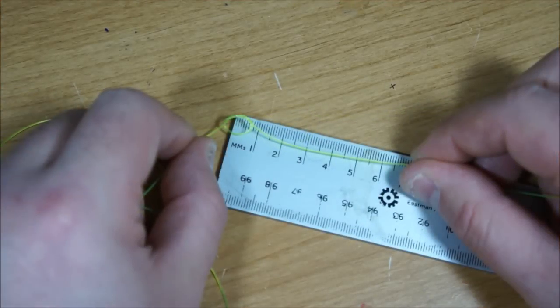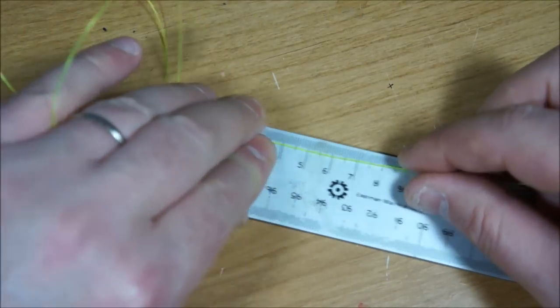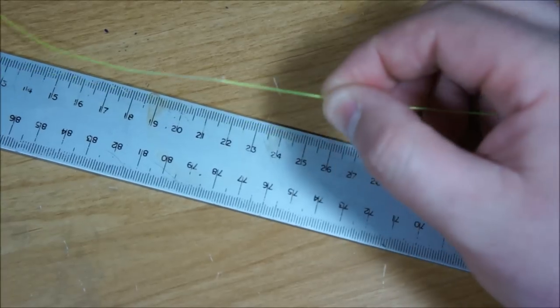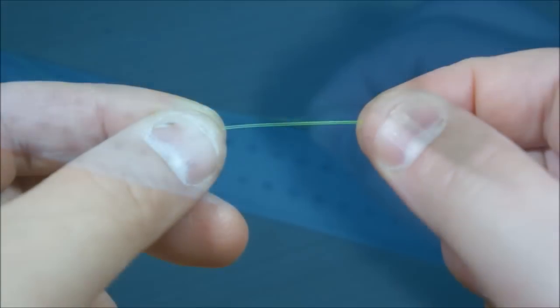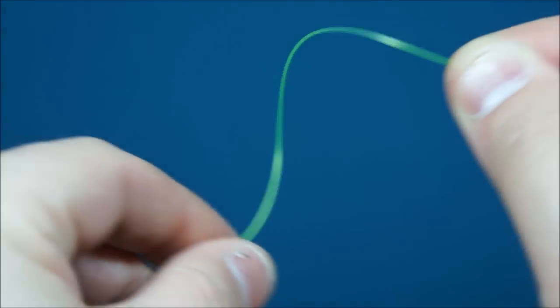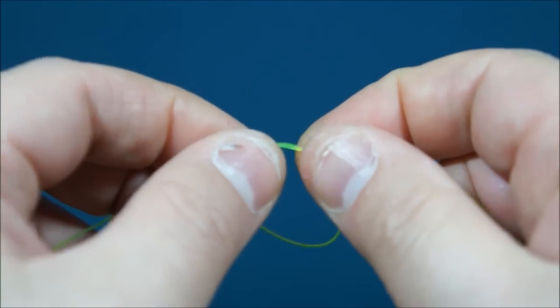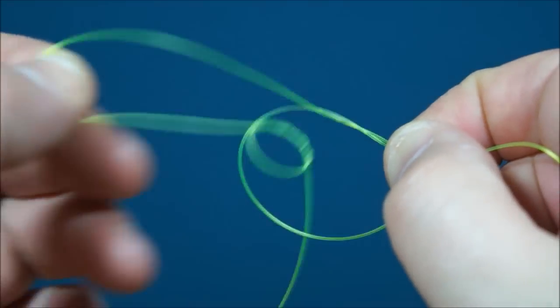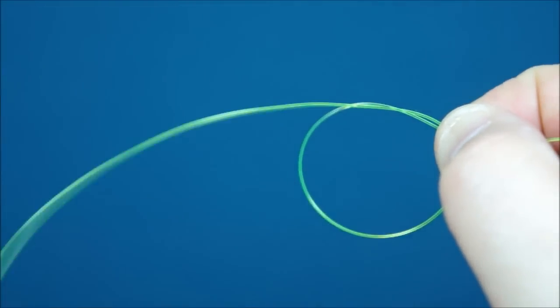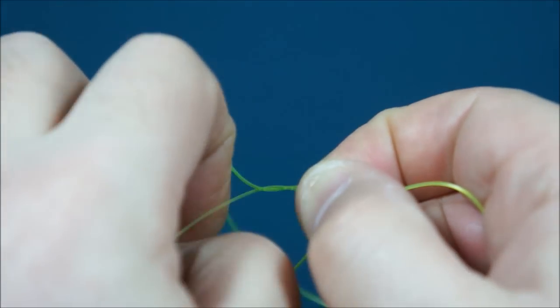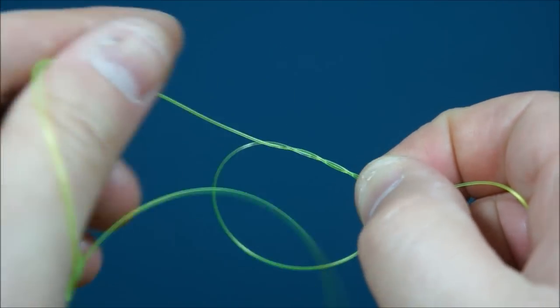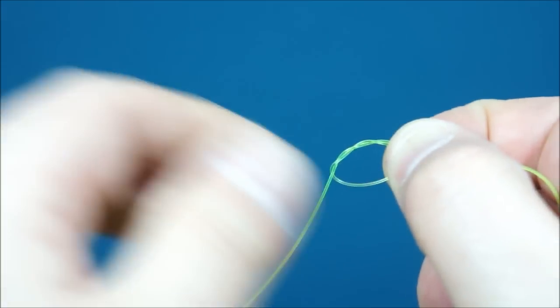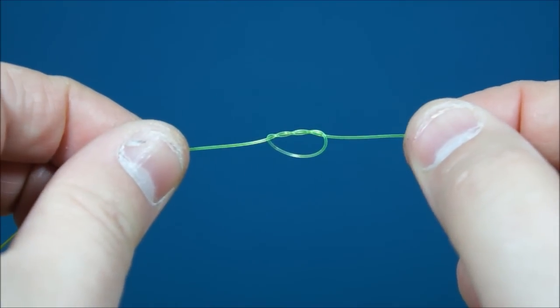Then placing that first knot at the beginning of the ruler I'm going to measure up another 250mm or 10 inches. And then in the next position I'm going to do exactly the same again. So I'm going to form a loop and pass the line through twice. I'm just going to hold that position and tighten that up. Again, not so it's closed, just so it's a bit tighter.